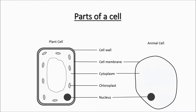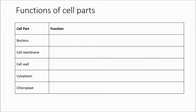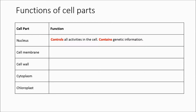Now let's look at the functions of each part of the cell. The nucleus controls all activities in the cell. The word 'control' is important — you should not use the word 'allow', but 'controls'. It also contains the genetic information that is passed on from parent to young. If you do not want to use the word 'genetic', you can also use the word 'hereditary'.